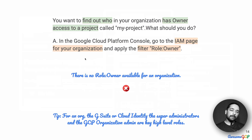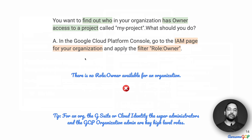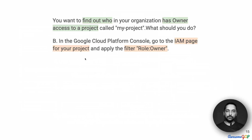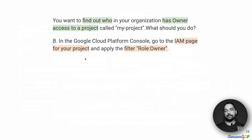A separate tip: at the organization level, when you have G Suite or Cloud Identity, the two very high-level roles are the super administrator and the GCP organization admin — those are the roles you work with at that level. Having eliminated option A, let's move on to the next option, which suggests going to the Google Cloud Platform Console, to the IAM page for the project — not the organization — and then applying the filter called role:owner. This makes sense. Thinking about the resource hierarchy, if we apply the filter at the project level, we should see all the owners for that project.